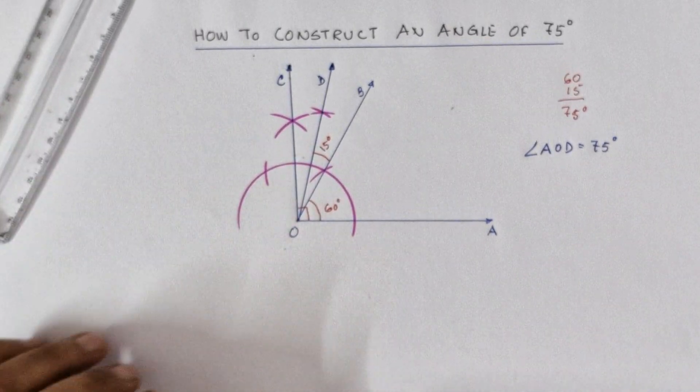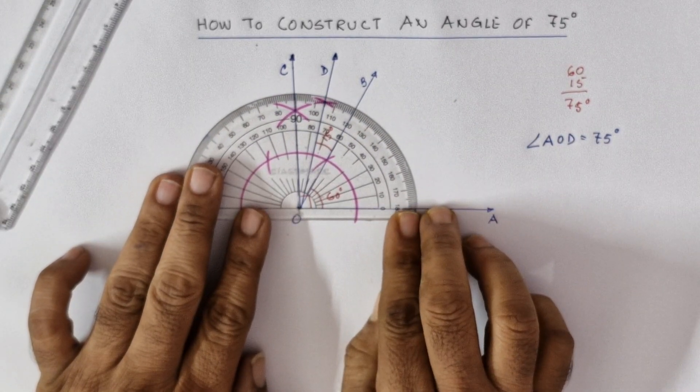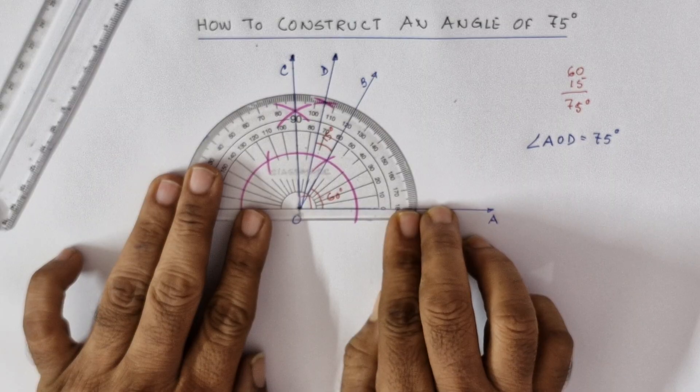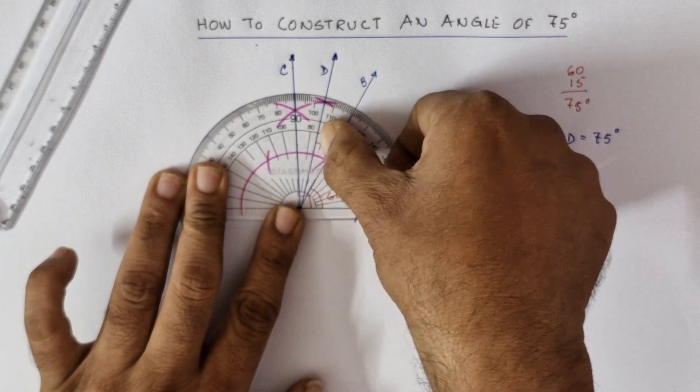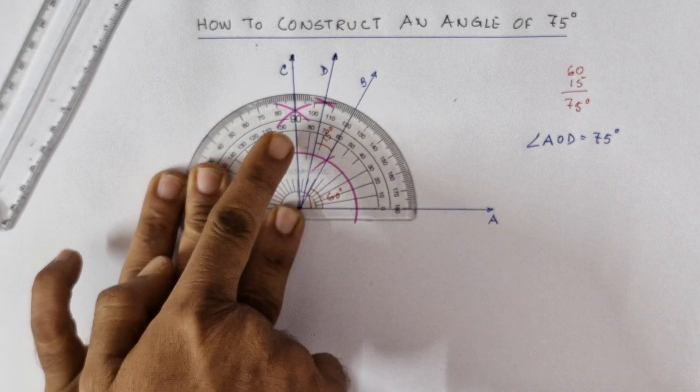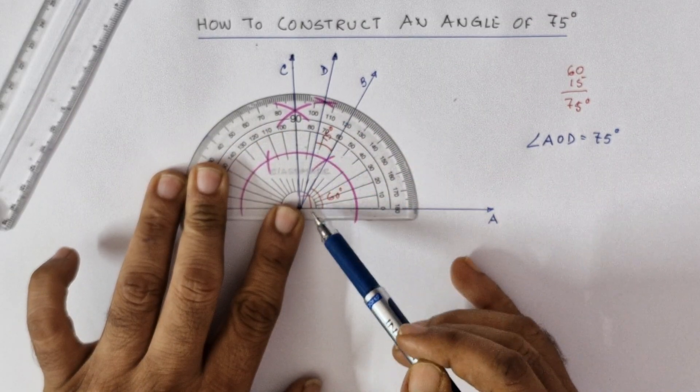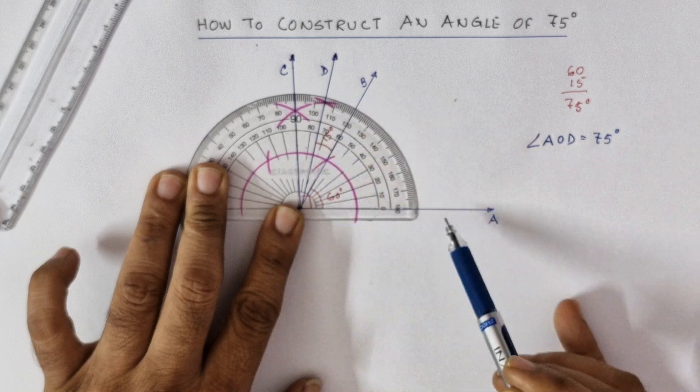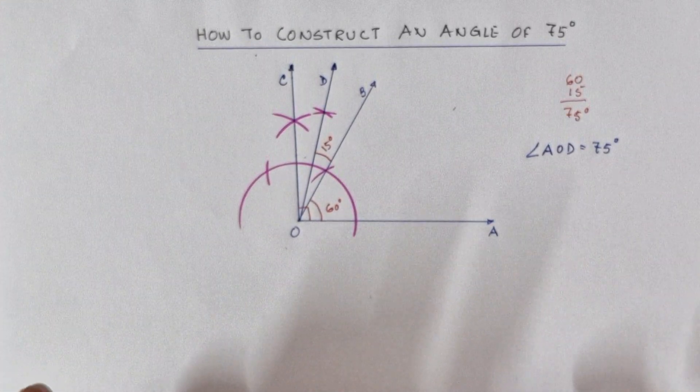Let's check it out with the protractor. Place it properly. Between 70 and 80 - this is 70 and this is 80. In between, this is 75. So we have successfully constructed the angle of 75 degrees with the ruler and compass.